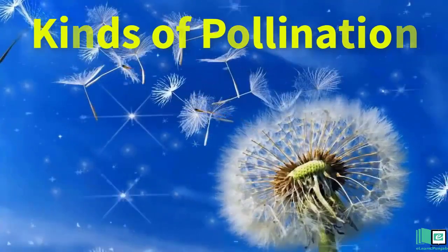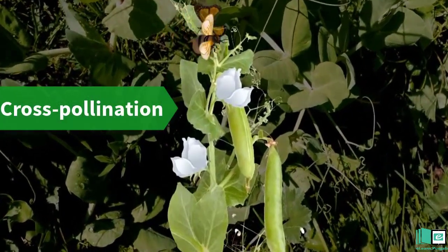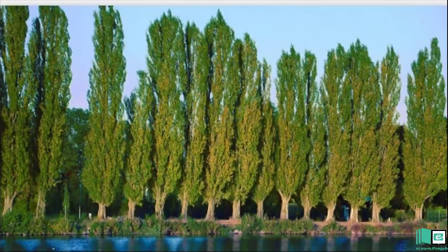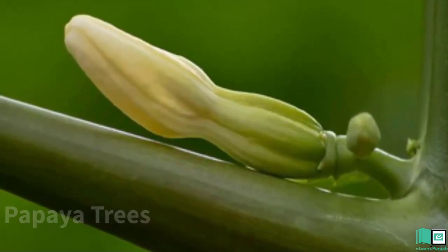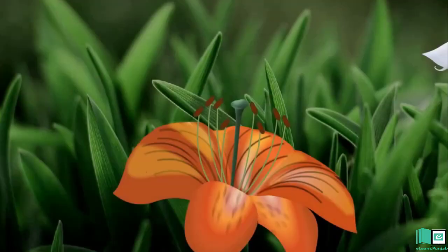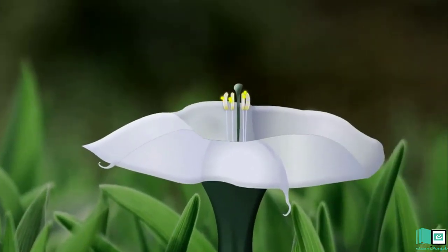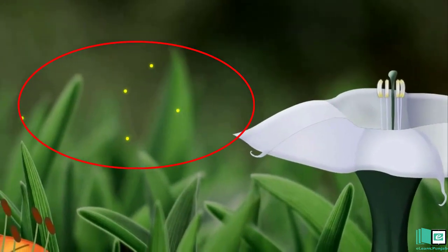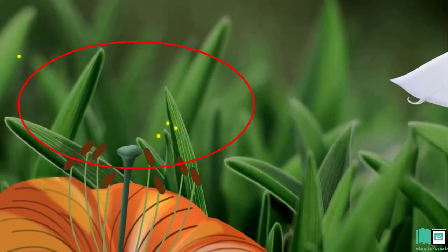Kinds of Pollination: Self-pollination and Cross-pollination. The transfer of pollen grains from the anther of a flower to the stigma of a flower on another plant of the same kind is called cross-pollination. Poplar, willow, apple, papaya trees, etc. are cross-pollinated plants.